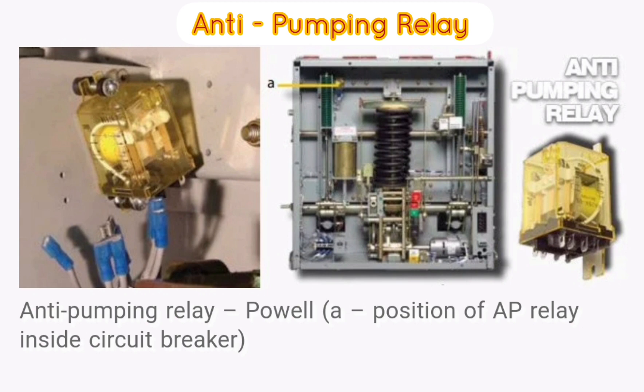What is an anti-pumping relay? The anti-pumping relay is a circuit breaker auxiliary relay that is used to protect the circuit breaker from multiple closing commands. In other words, the anti-pumping relay is used in circuit breakers to prevent unwanted closing of the circuit breaker after tripping.